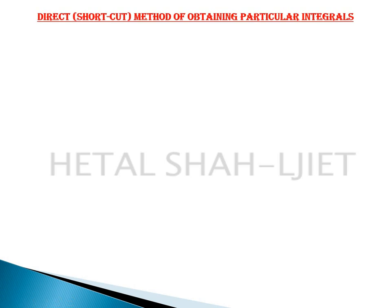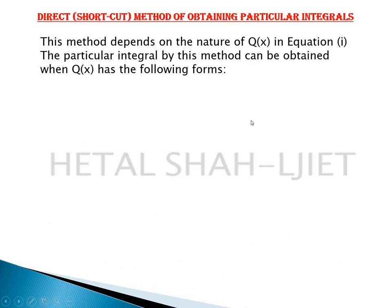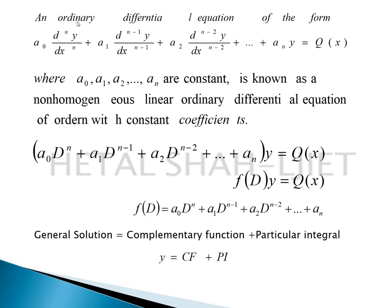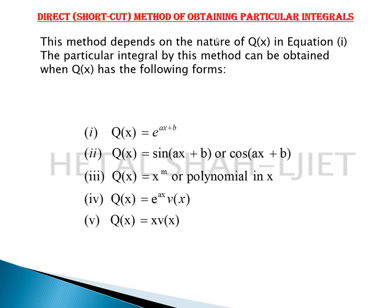The direct method of obtaining the particular integral — that is the shortcut method — depends on the nature of Q(x), which is the right hand side of the non-homogeneous linear ODE. The particular integral by this method can be obtained when Q(x) has the following forms. There are 5 forms given here.